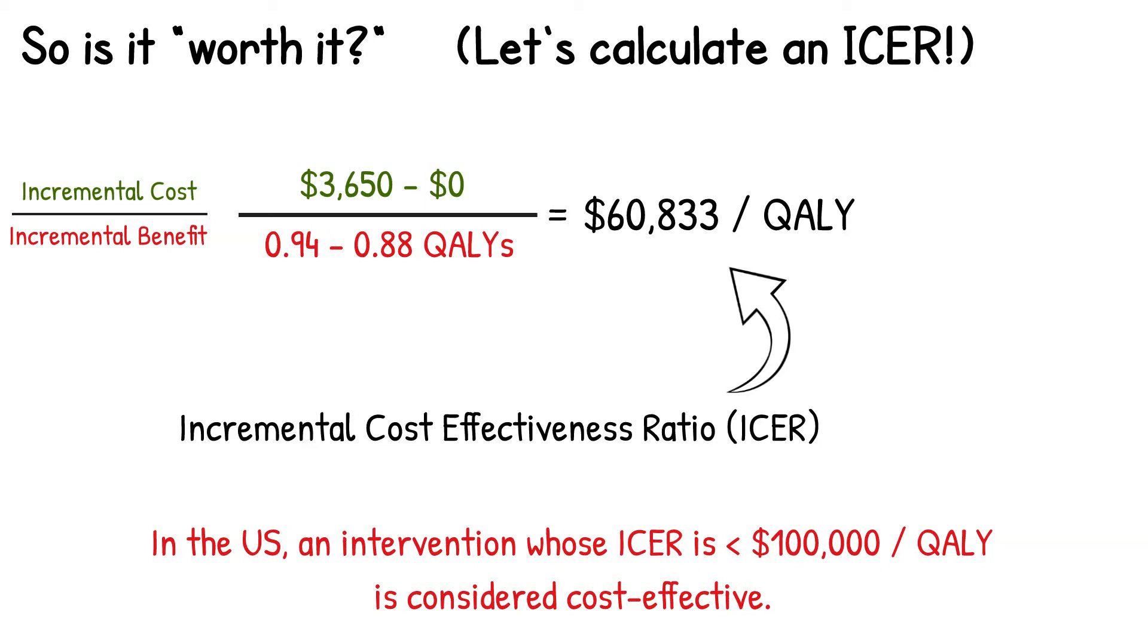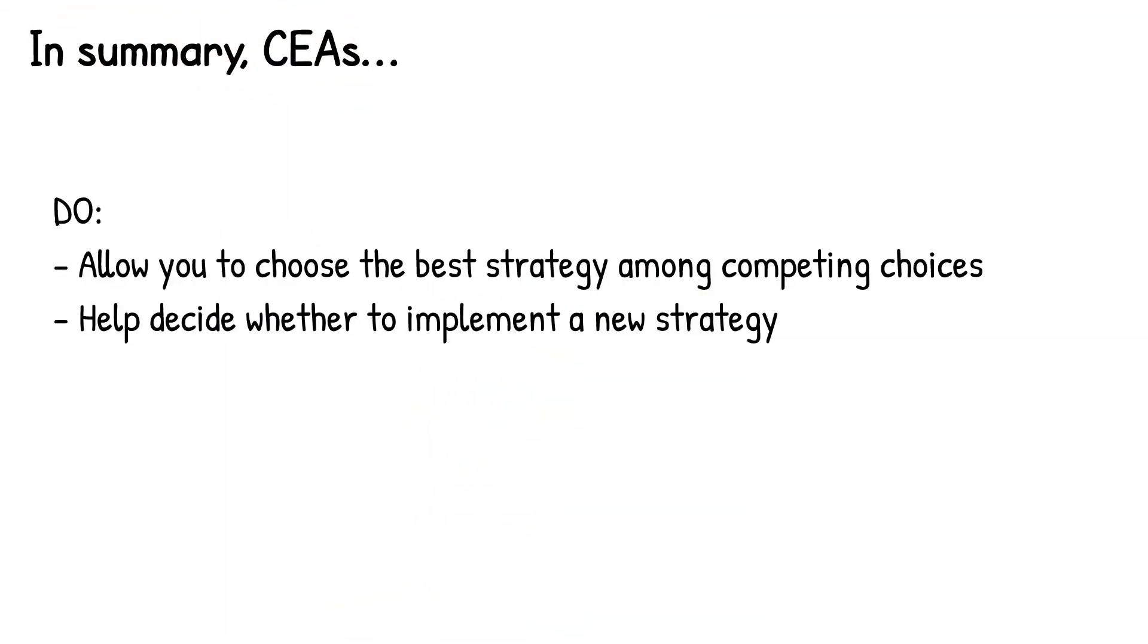So in other words, for our silly umbrella example, the incremental cost of $60,833 per QALY is considered an acceptable amount to spend for the QALY gained and would be considered cost effective. So to summarize then, cost effectiveness analyses allow you to choose the best strategy among competing choices as well as help decide whether or not to implement a novel strategy. They don't, however, incorporate the prevalence of the disease or the overall budget impact.